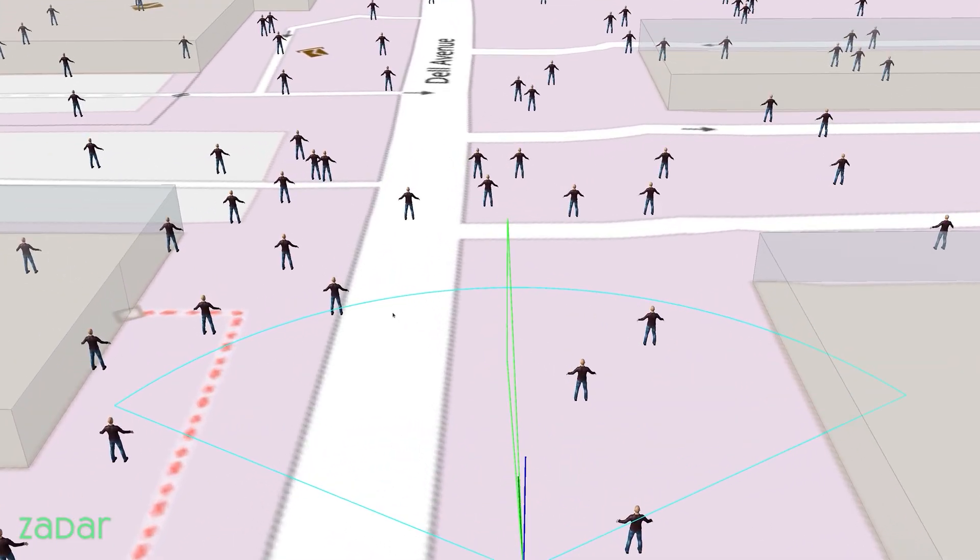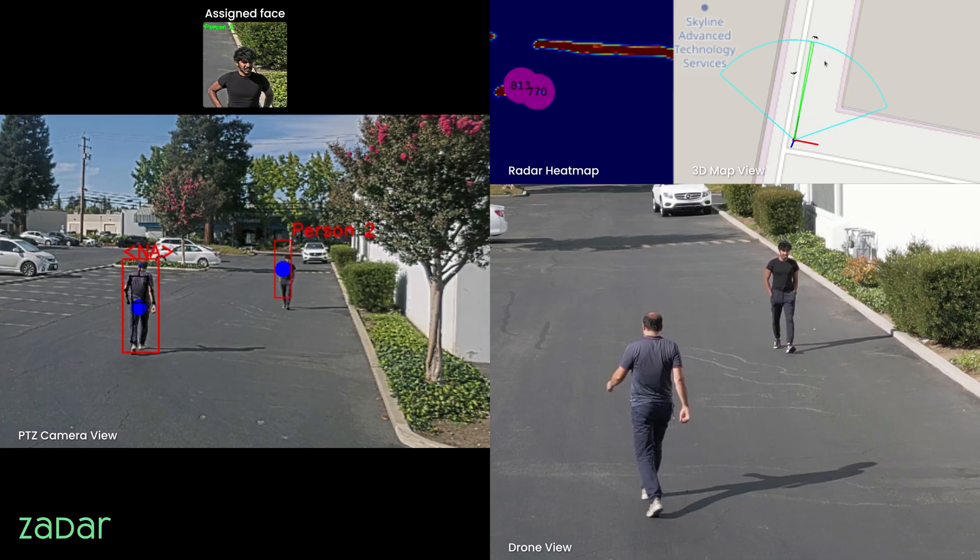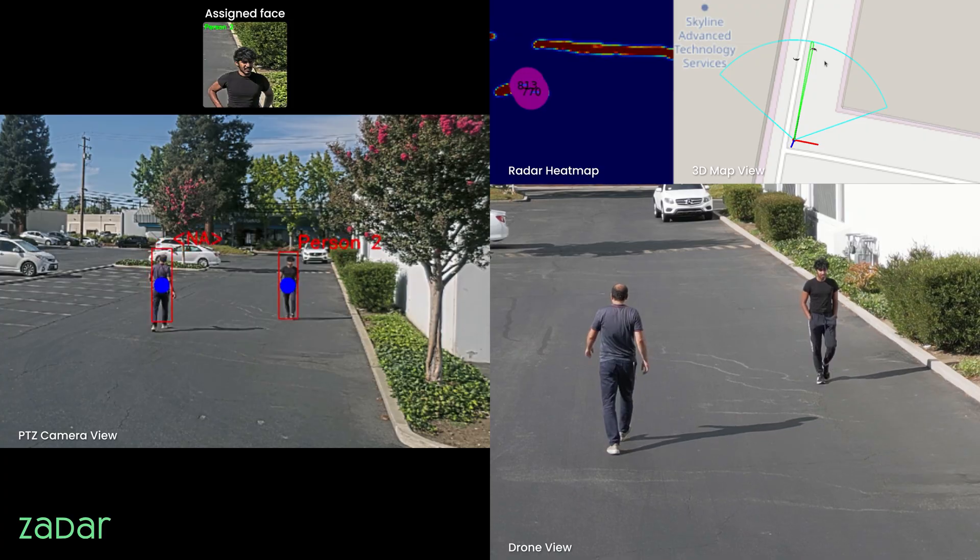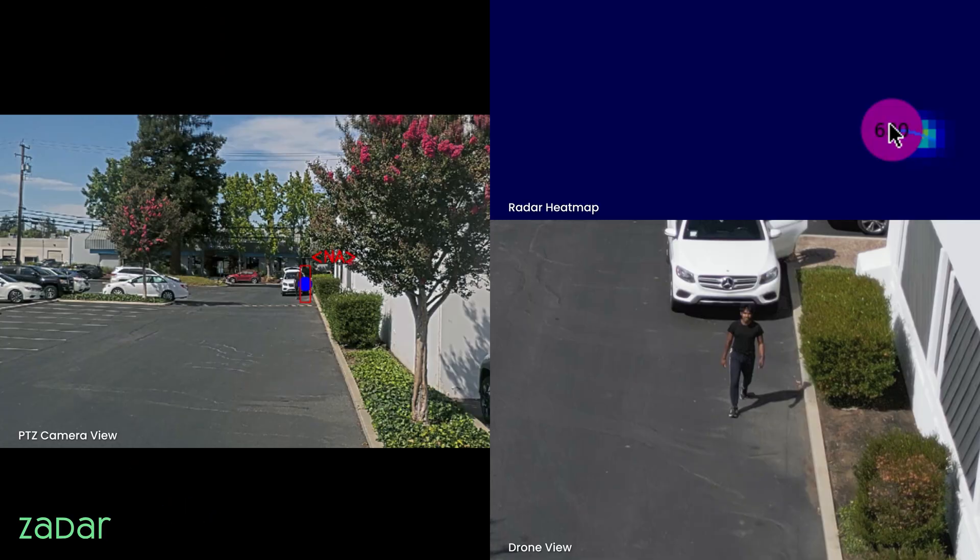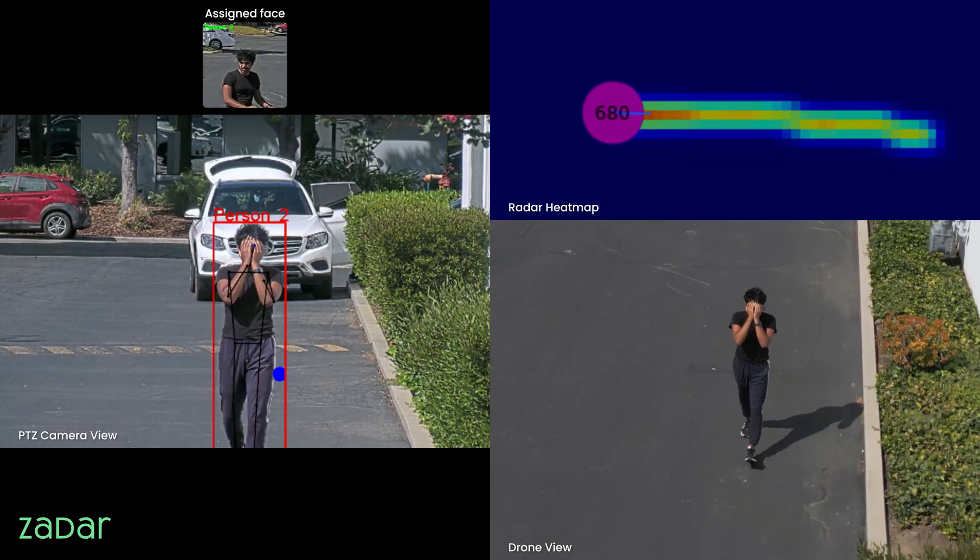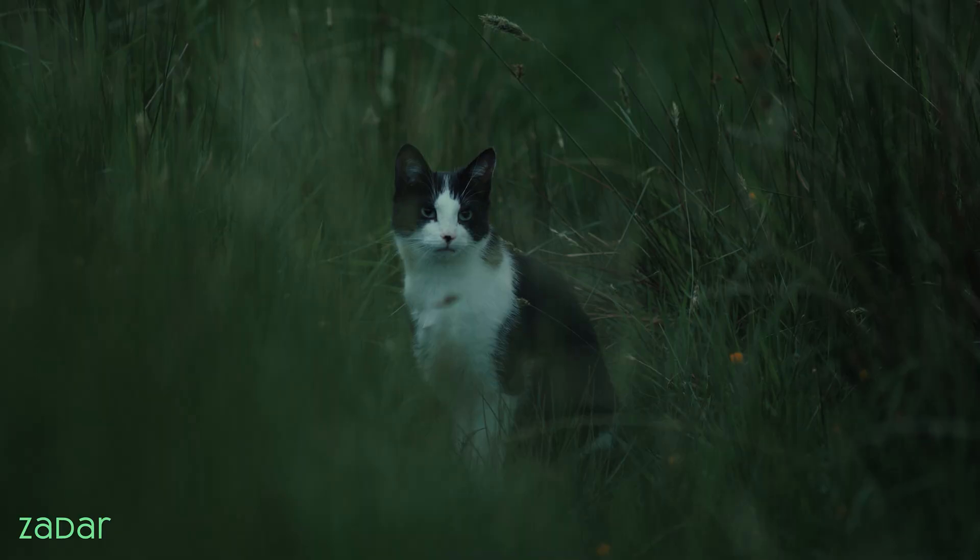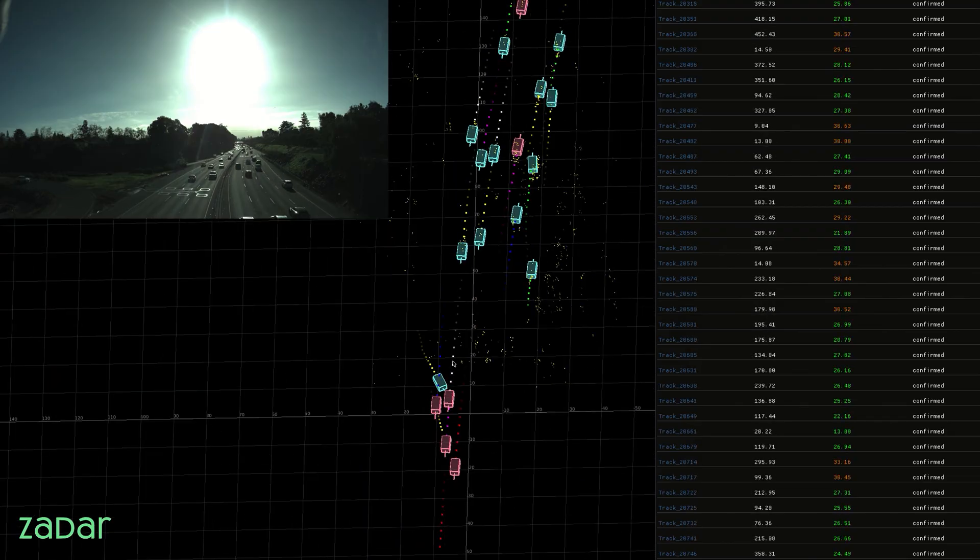In crowded spaces, radar detects the moving objects, creates a track list of all the moving objects in the environment, then guides the PTZ camera to zoom to the exact location of the object. At this point, the camera could identify the moving objects, be it humans, vehicles, pets, using advanced multi-dimensional tracking.